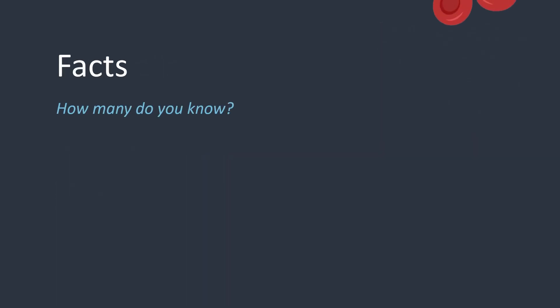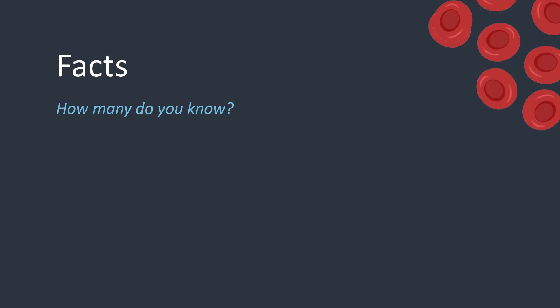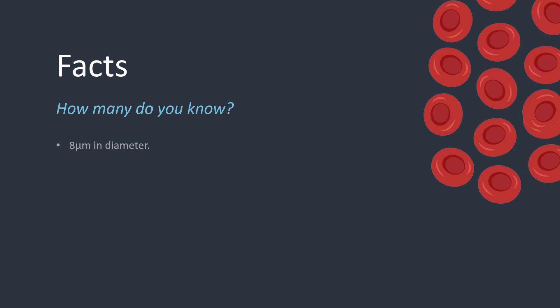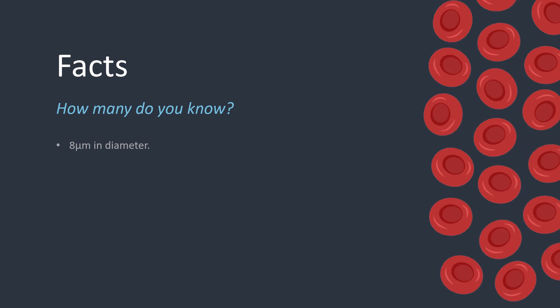Let's start with some basic facts about red cells — see how many of them you already know. Red cells are seven to eight micrometers in diameter. This is much larger than the capillaries through which they flow, and so they have a very flexible internal structure allowing them to squeeze through.